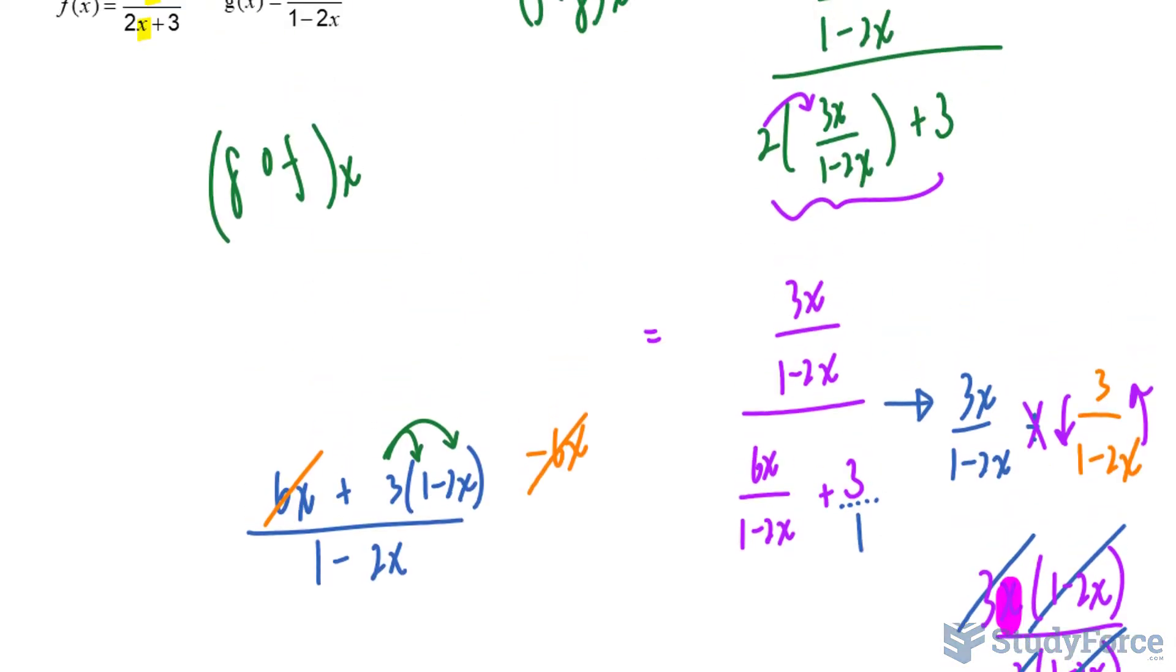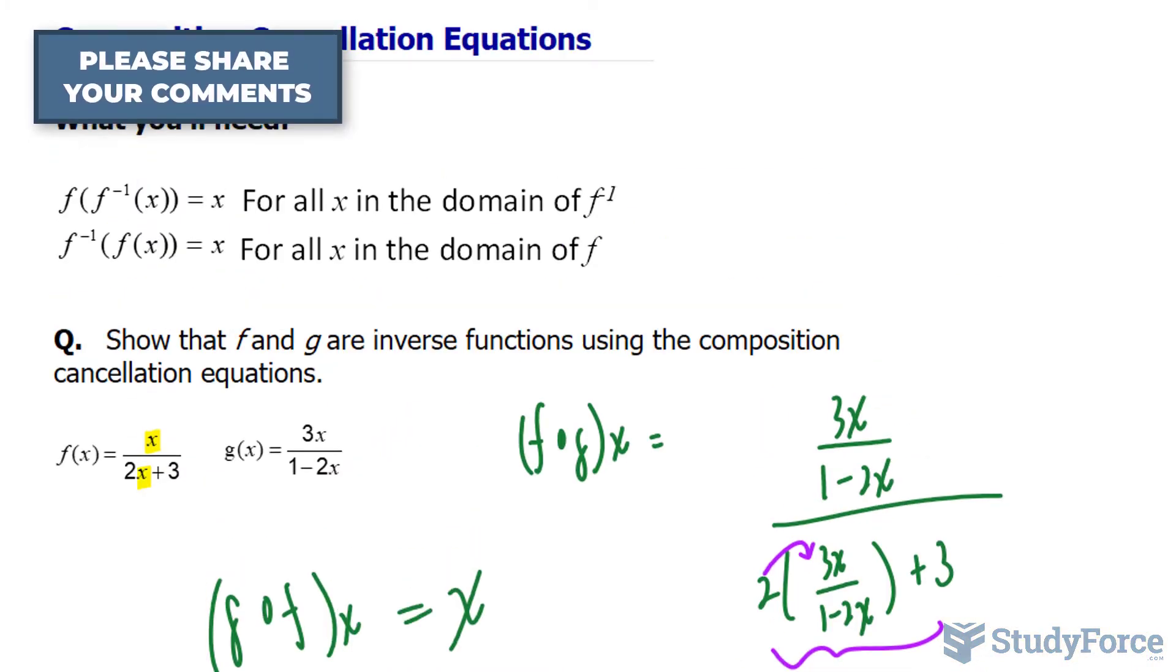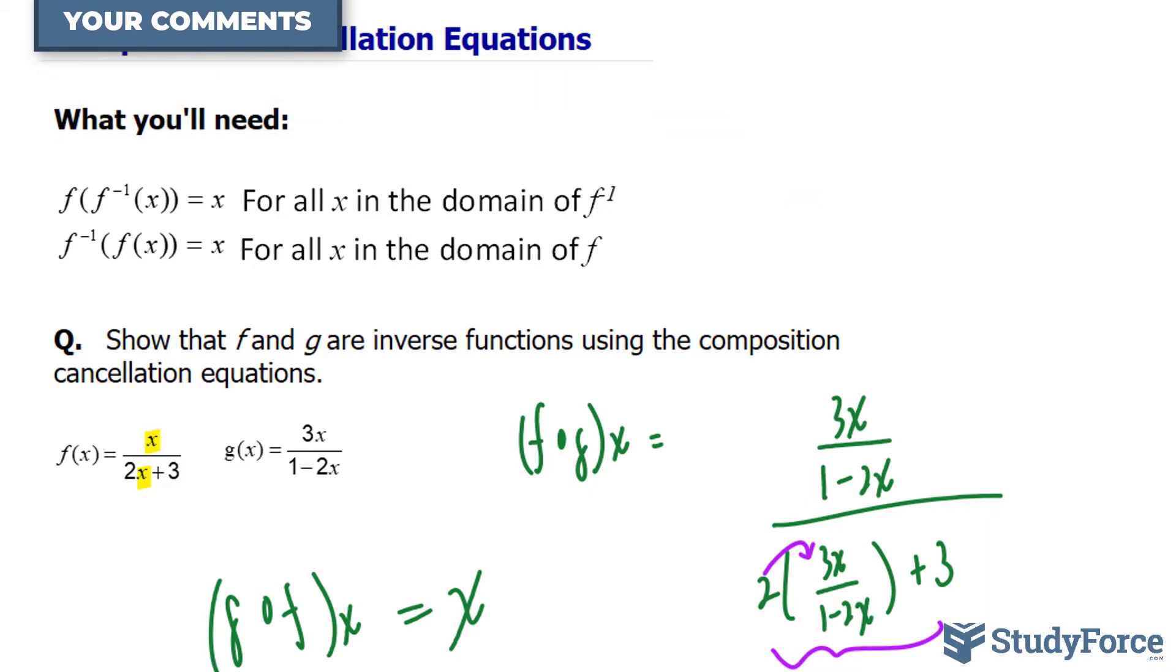So that's part of the proof. We have to prove that again for g composed of f at x. Now, rather than going through it, I'm just going to let you know that it does, in fact, equal to x. And that right there shows how two functions can be shown to be inverses of each other using the composition cancellation equations idea.